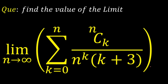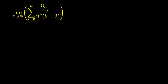Hello everyone. Today we're going to look at a problem from limits. The question is: limit as n tends to infinity of summation k varying from 0 to n of nCk divided by n raised to power k, multiplied by k plus 3.